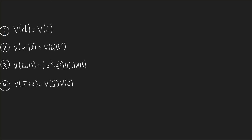Result number one tells us that the Jones polynomial of the reverse of an oriented link is the same as the Jones polynomial of that oriented link. The second result tells us that the Jones polynomial of the mirror of a link - I've written V(T) to emphasize this is a polynomial in T - well, the Jones polynomial of the mirror is the Jones polynomial of the original link with T inverse substituted in place of T, so with all the powers negated.